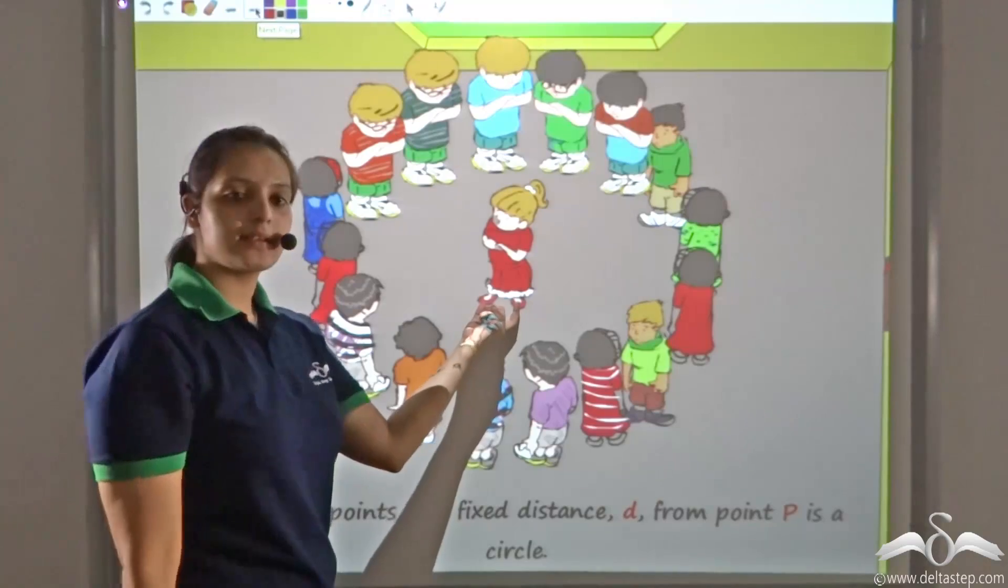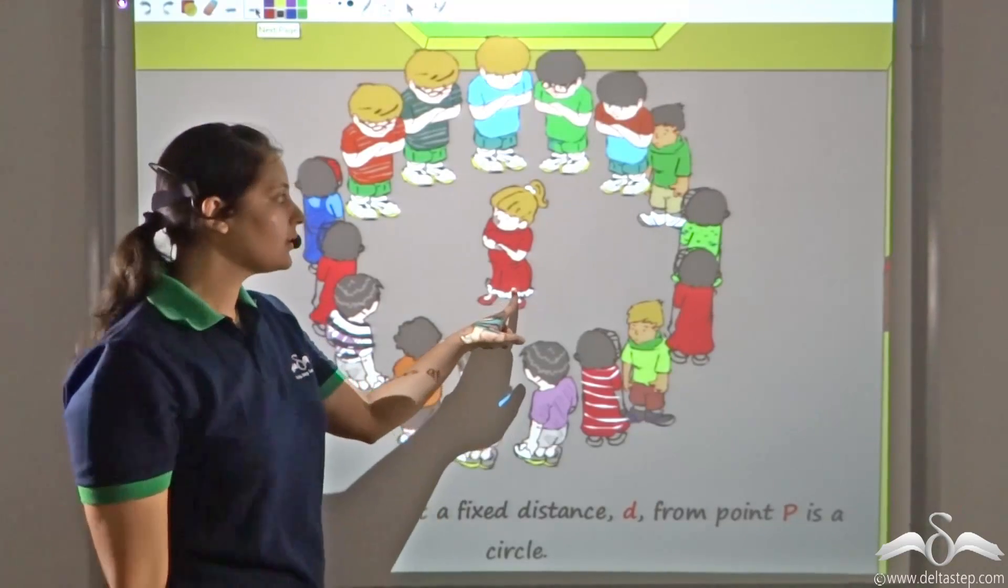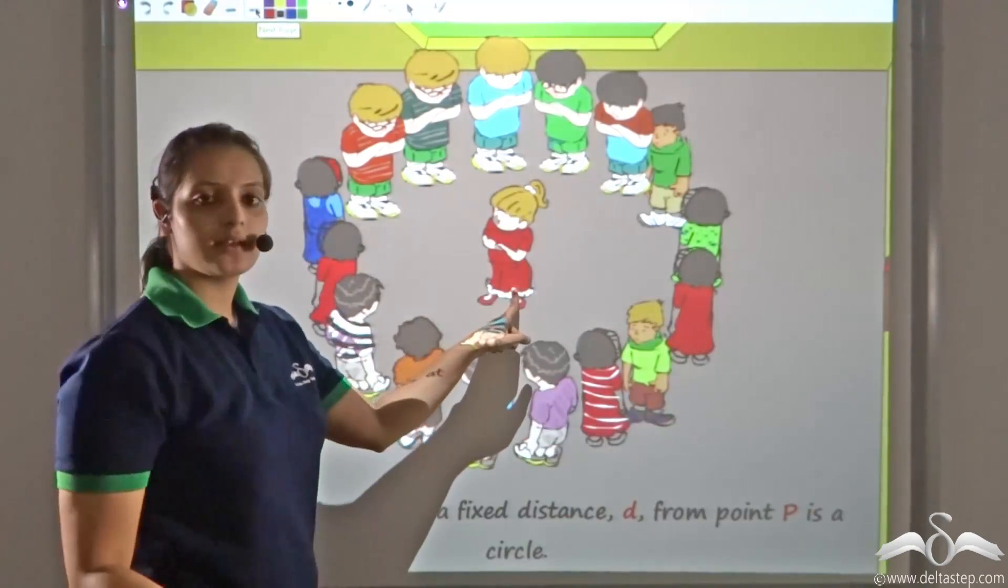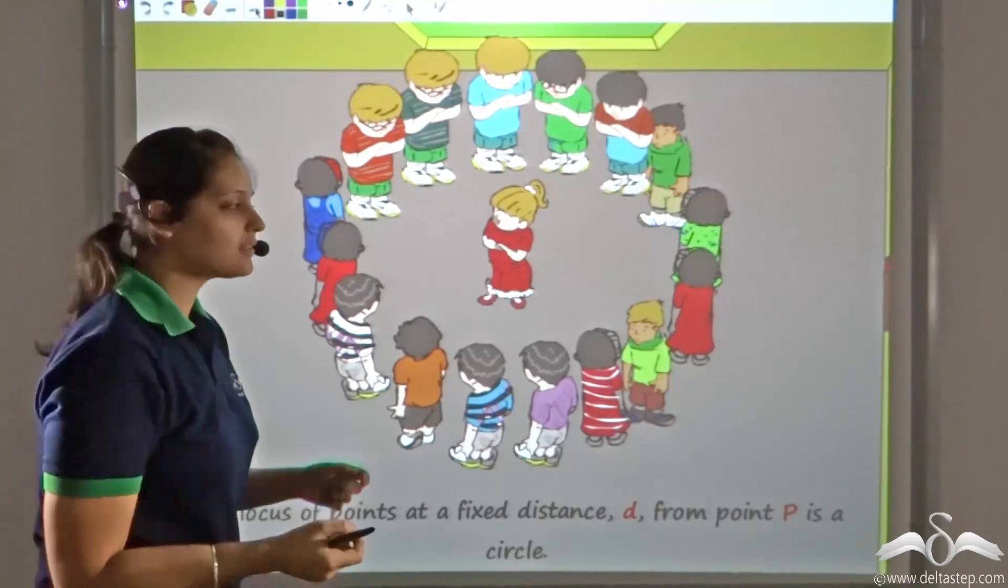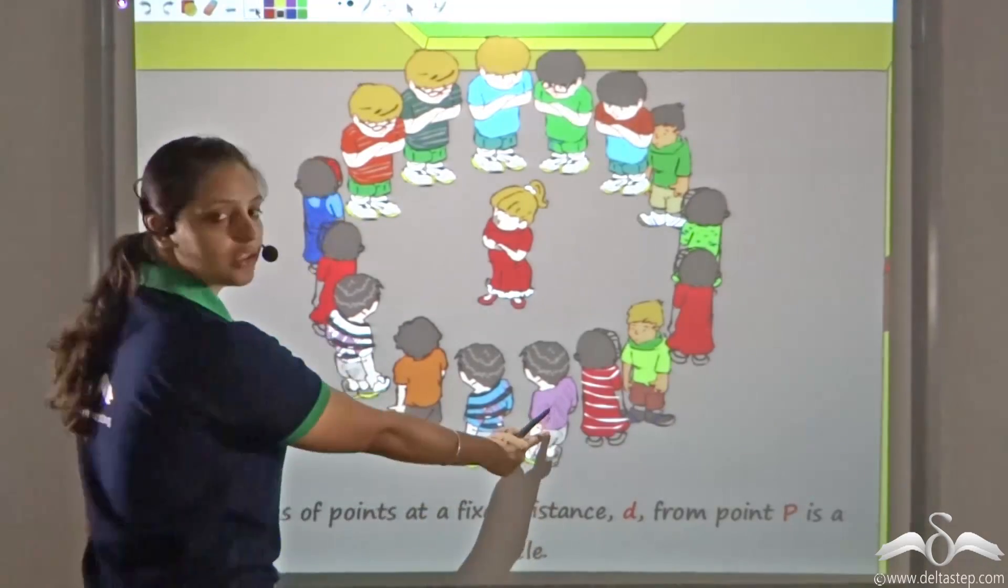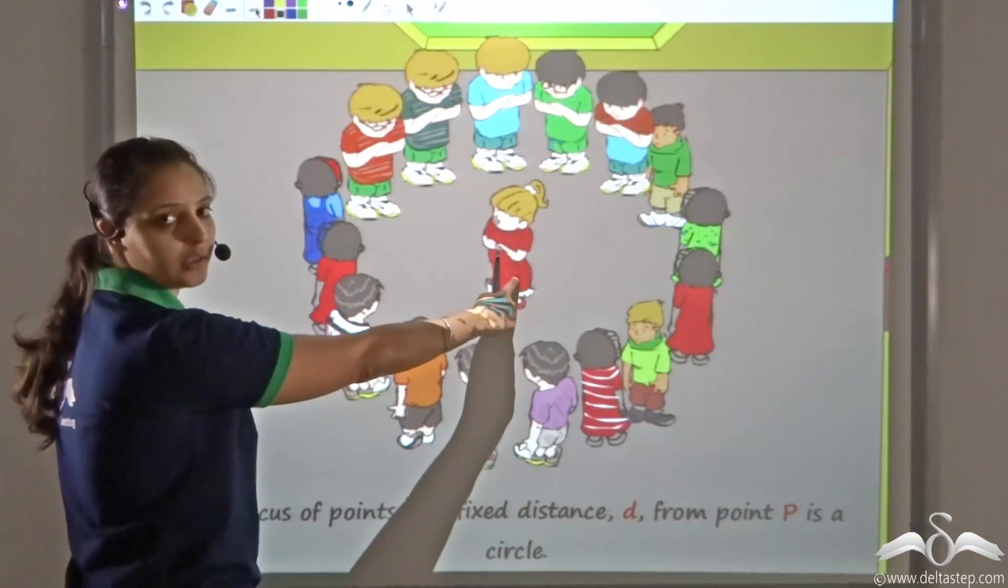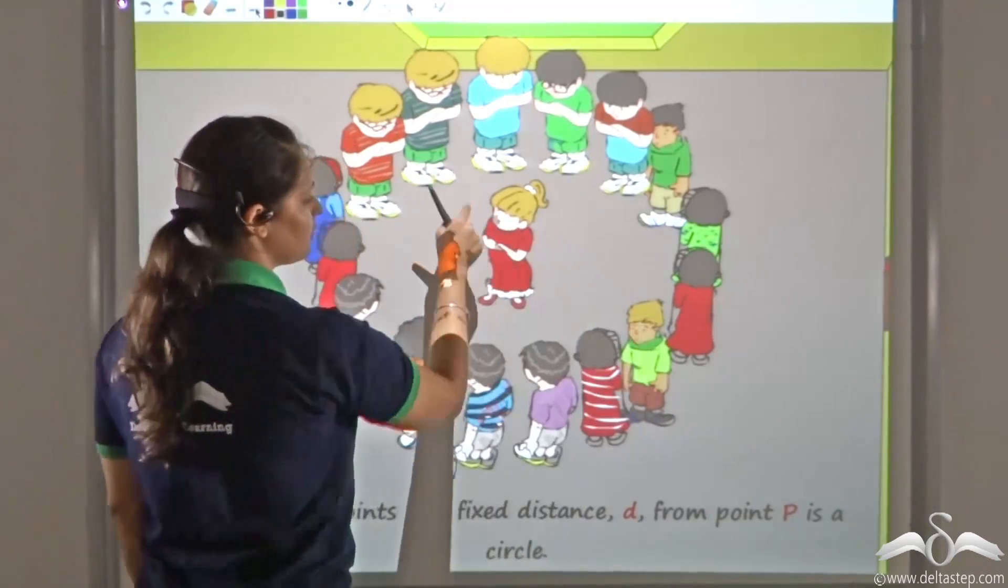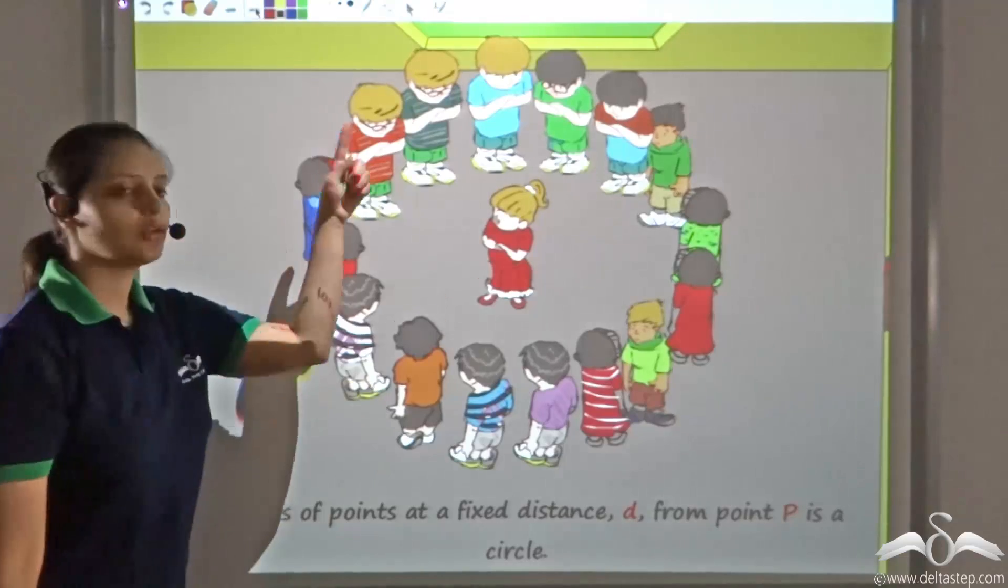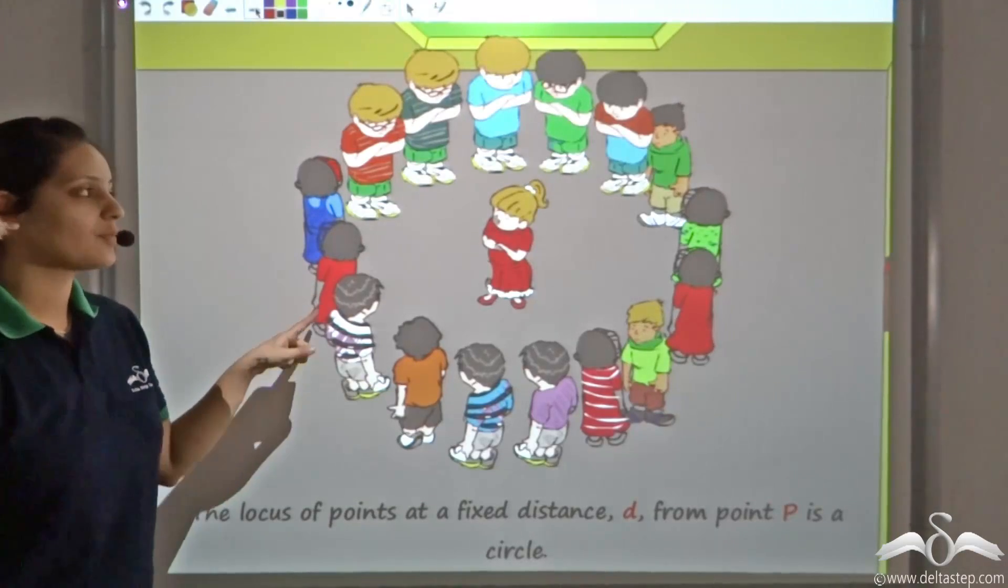This girl can be considered as a point which is fixed, and all the other students are nothing but points that are satisfying a condition, which is they are standing three feet away from this fixed point. So when you are three feet away from a fixed point, the locus of all such points gives me a circle.